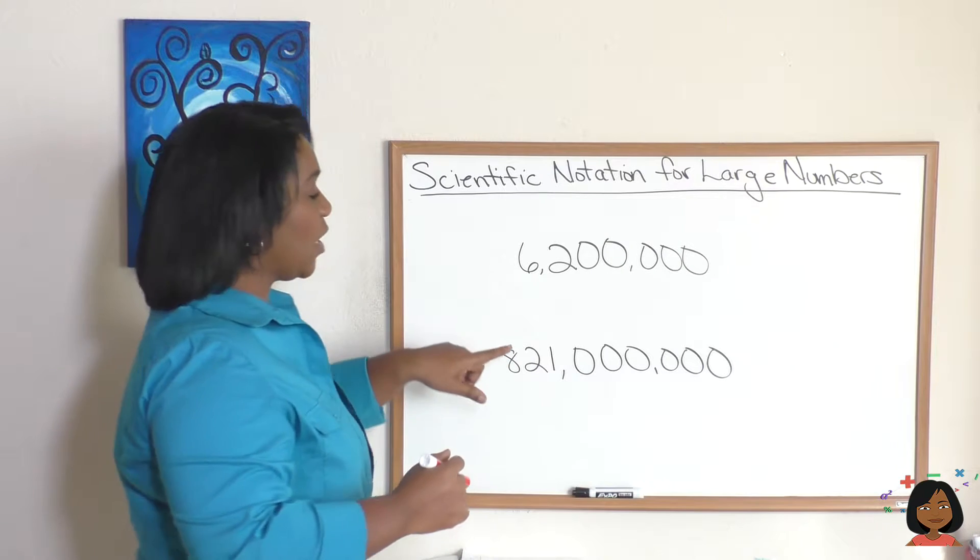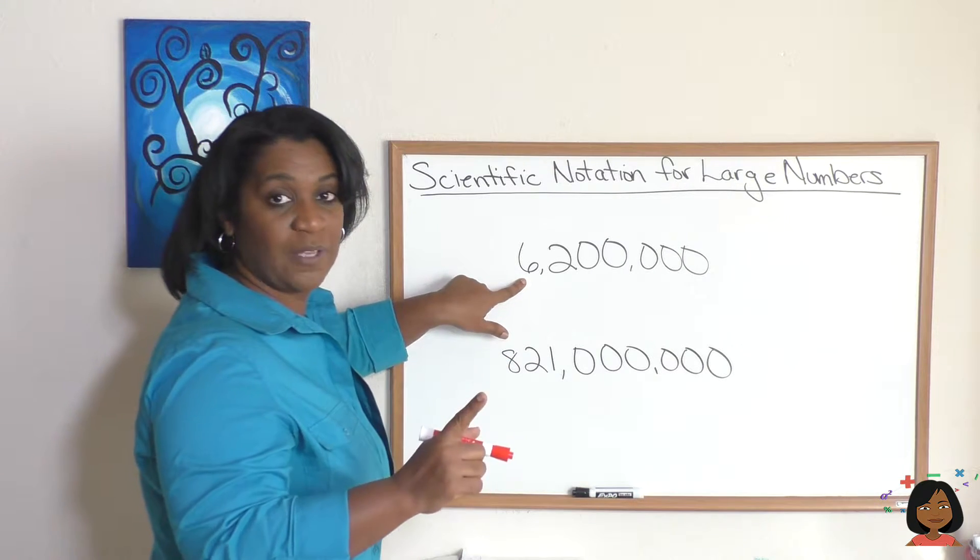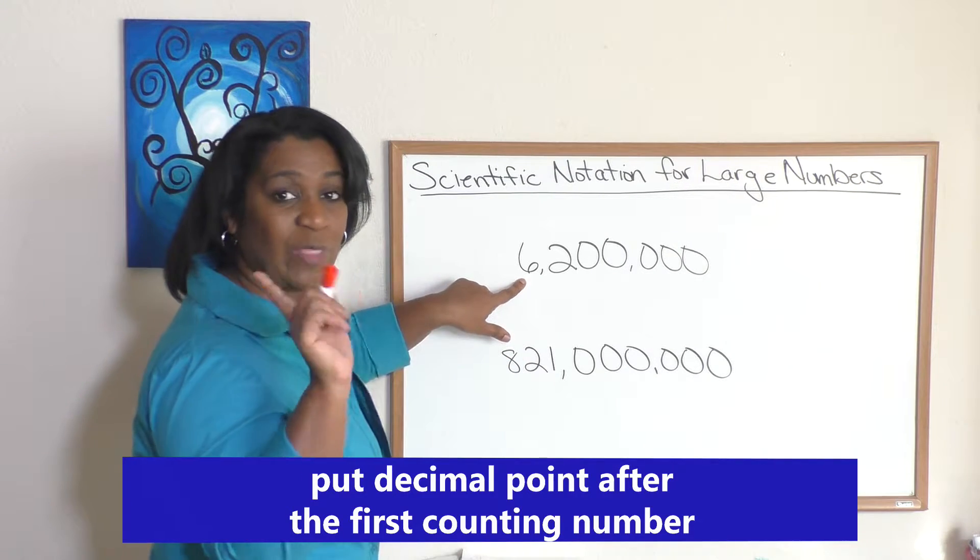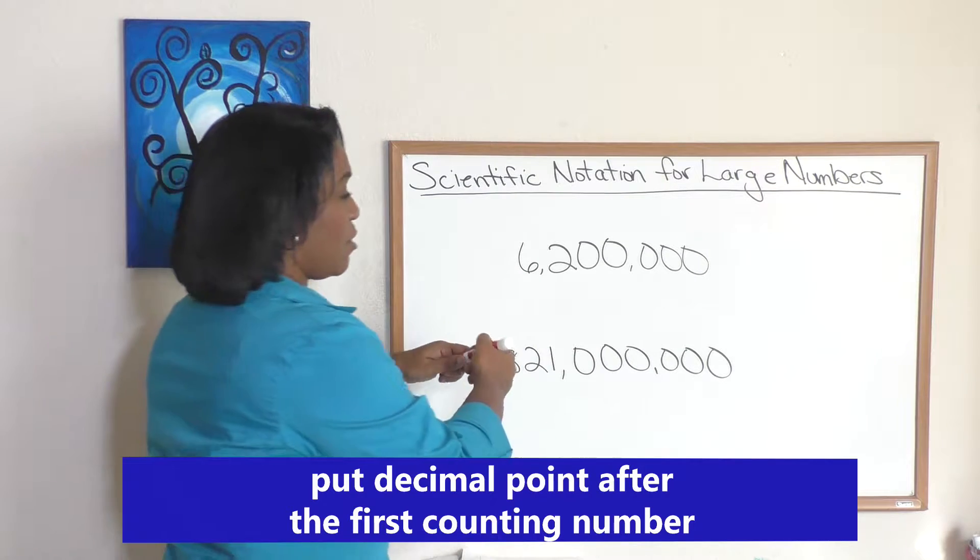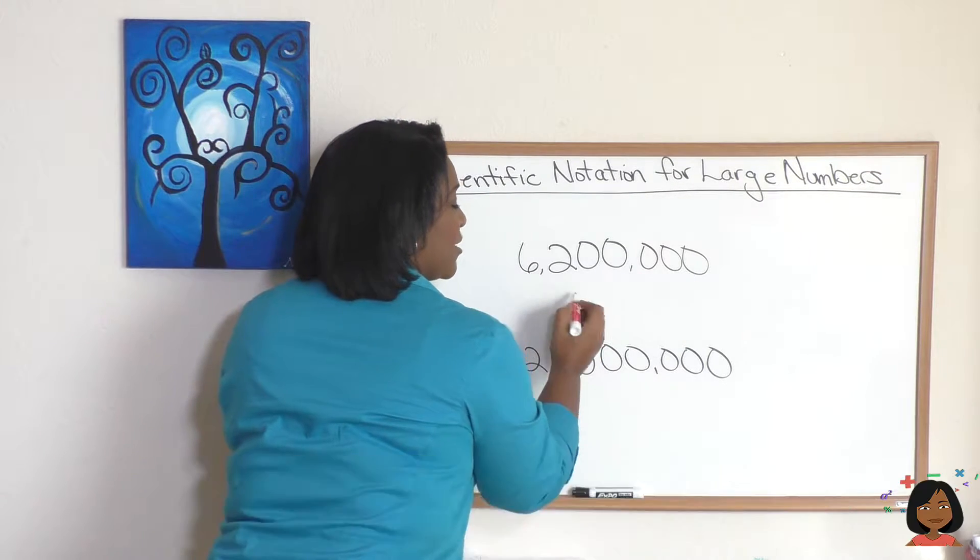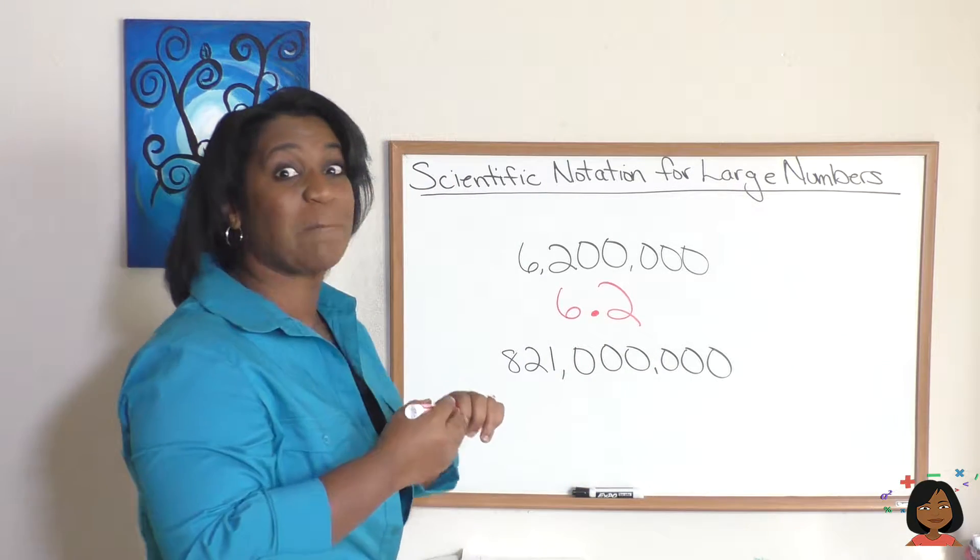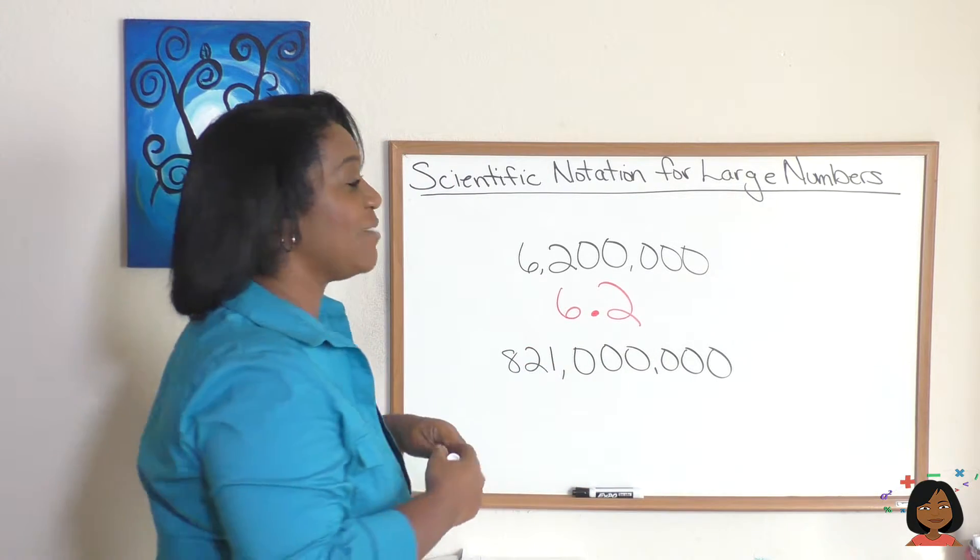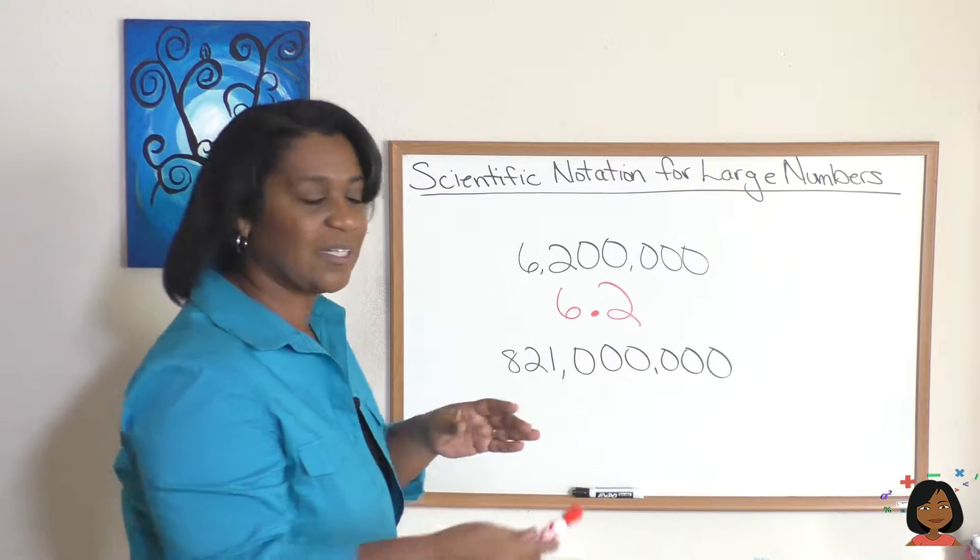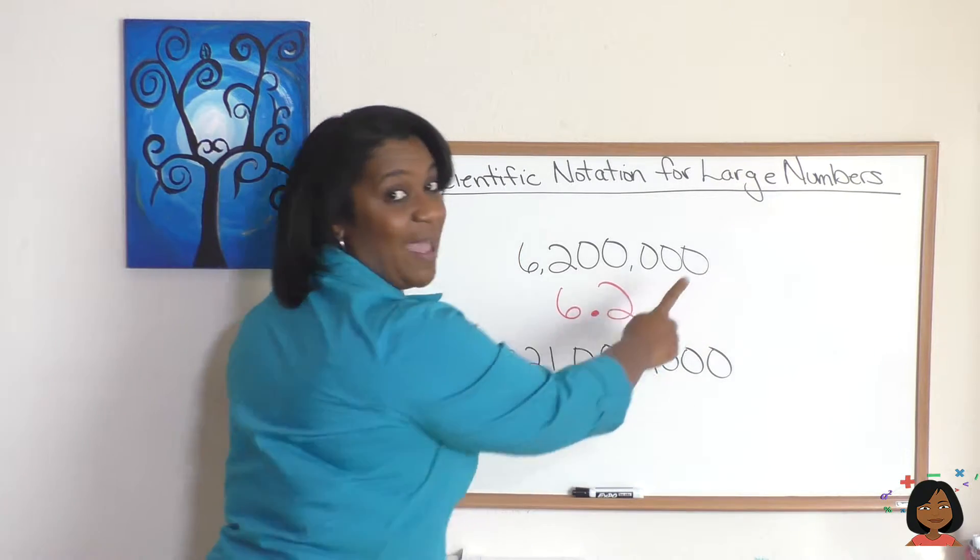And how we do that is we go to our first whole number and put the decimal point right after that number. So I'm going to make this 6.2. That's where I want my decimal to end up when I'm done. Where is the decimal currently? We know the decimal's all the way back here.